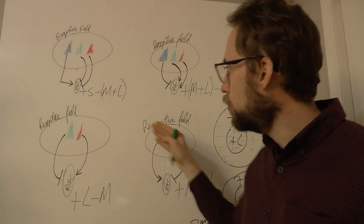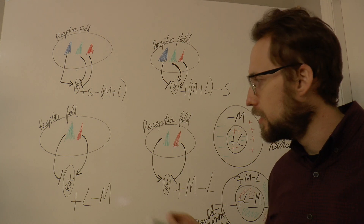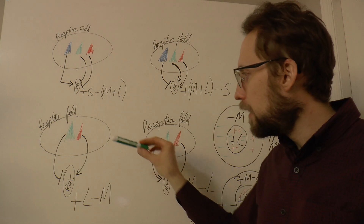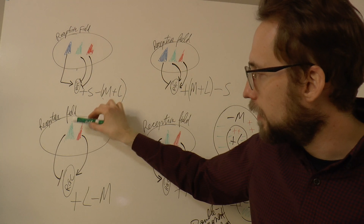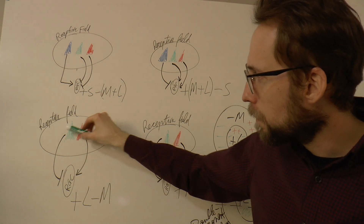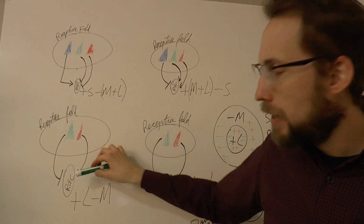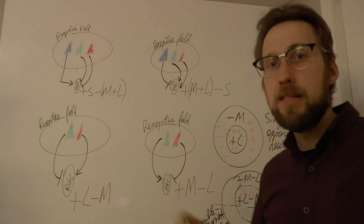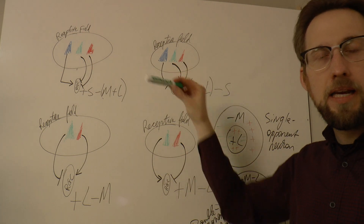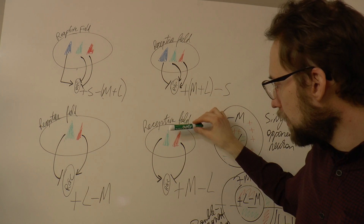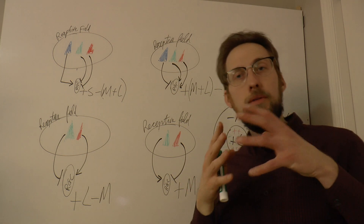Now there are two more circuits which cut out short wavelength altogether — we only have medium and long wavelength cones. This is plus L minus M. If it gets hit by long wavelength light, the ganglion cell increases its action potential rate. If it gets hit by medium wavelength light — minus M — it decreases its action potential rate. And the opposite circuit, plus M minus L: medium wavelength light excites the retinal ganglion cell, increasing action potential rate, and long wavelength light inhibits the ganglion cell, decreasing its action potential rate. That's it — and that's all on the retina.